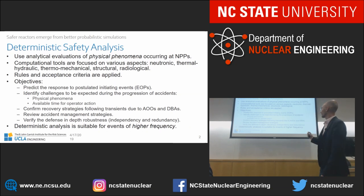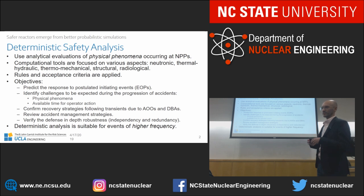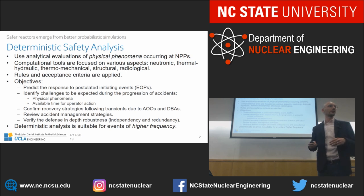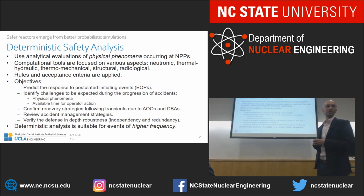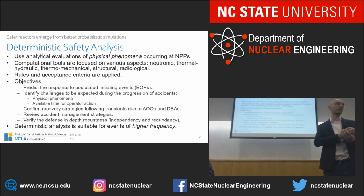I'm sure everybody in the room is familiar with deterministic safety analysis. In order to do deterministic safety analysis, you can use identity evaluations of the physical phenomena occurring in the nuclear power plant. You can use a wide range of computational tools depending on the question you're looking at. You're going to apply some rules or acceptance criteria defined by the regulators. At the end of the day, you want to predict a response to postulated initiating events. You can also identify the challenges to be expected during the progression of accidents, look at the physical phenomena, and extend them.